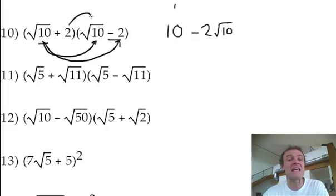First, outer. What's the inner? Yeah, that's a positive 2 root 10. Because all you can do is go, what's 2 times root 10? This is the positive one. Finally, what's 2 times negative 2? It's negative 4.